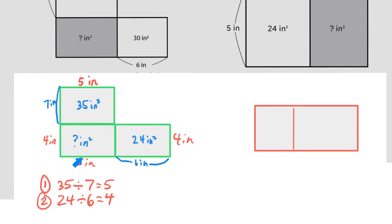And now I have the information I need to figure this out. So four times five is going to be 20 square inches, and that's my answer.